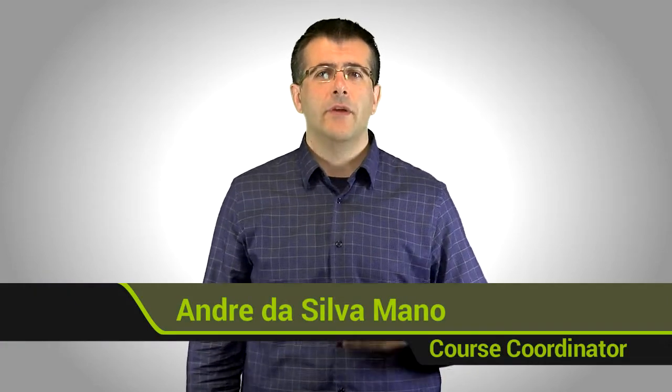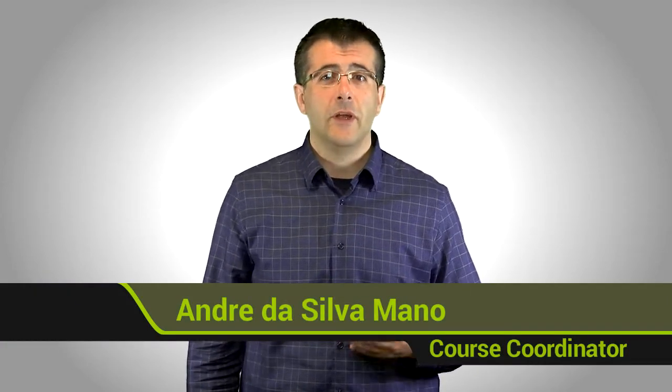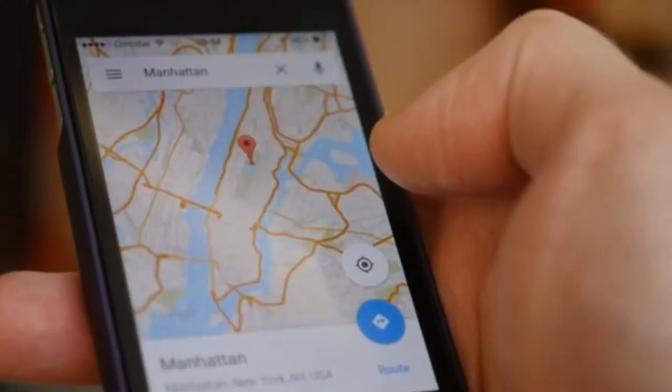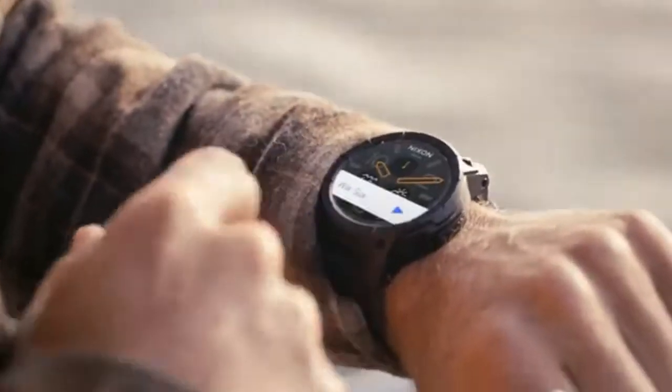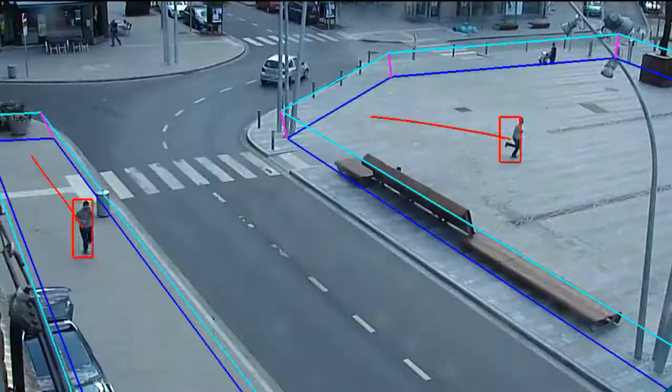Nowadays, a huge amount of data carrying locational information is collected every minute by small devices like phones or smart watches, satellites in orbit, or sensors spread around the cities. We call this information geodata.